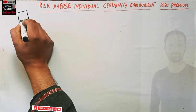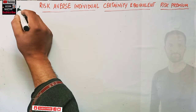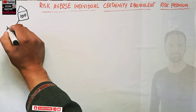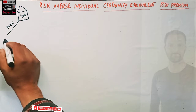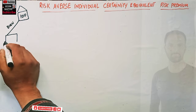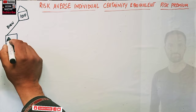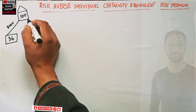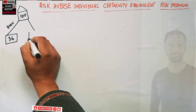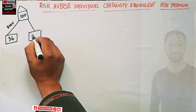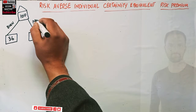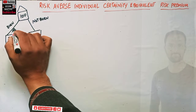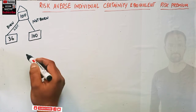He owns a house worth 100 dollars. There is a possibility that this house may burn, and in this case the house value comes out to be 36 dollars. In case it does not burn, the value remains the same — worth 100 dollars.